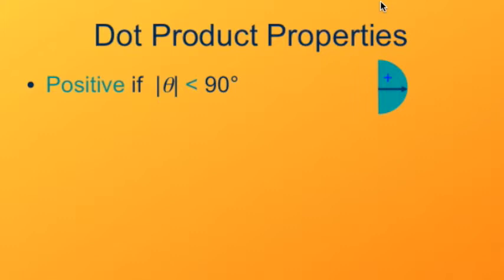The first vector is shown in the direction of that blue arrow. Any vector within that blue semicircle will give a positive dot product.